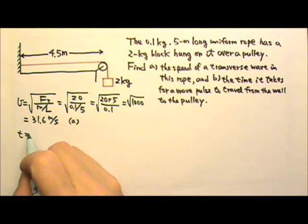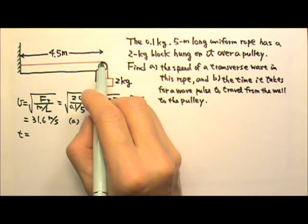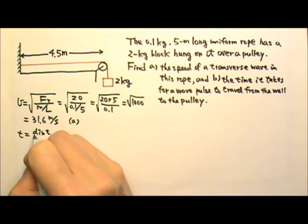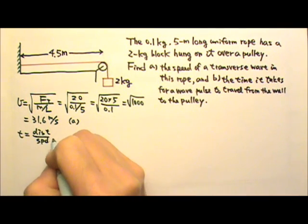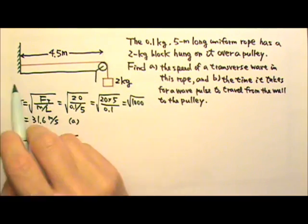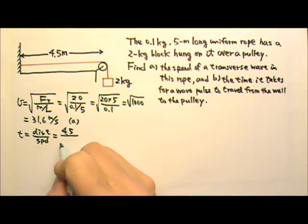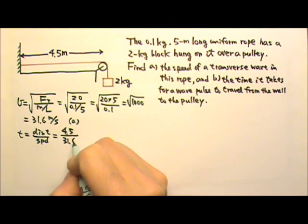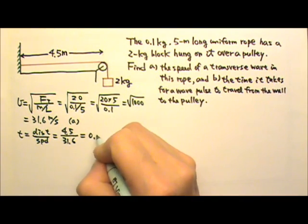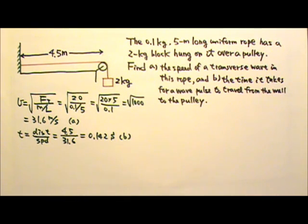Part B: the time it takes for a wave pulse to travel from this end to the pulley is the distance traveled divided by the speed. The distance is 4.5 meters, not 5 meters. So it's 4.5 divided by 31.6. The time is 0.142 seconds. That's the answer for part B.